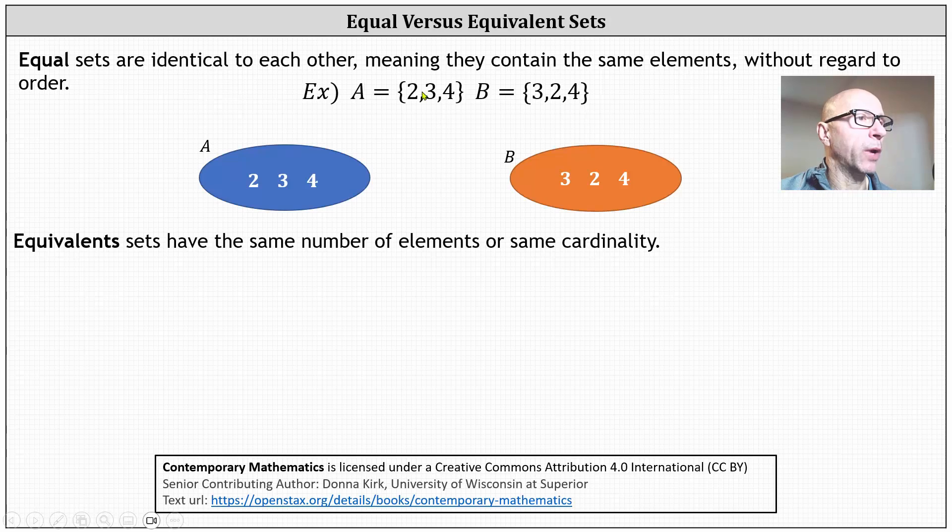For example, we have set A with elements 2, 3, and 4. We have set B with elements 3, 2, and 4. Because the two sets have exactly the same elements without regard to order, we can say that set A equals set B.